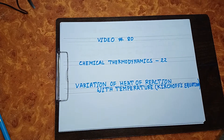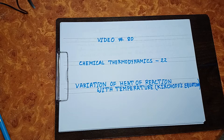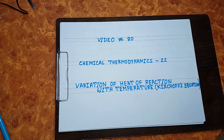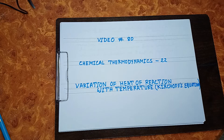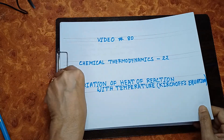Hello viewers, welcome to video number 80 of the channel ChemFilly. Video number 80 is the 22nd episode of chemical thermodynamics. The topic of this episode is variation of heat of reaction with temperature, that is Kirchhoff's equation. So let's start.